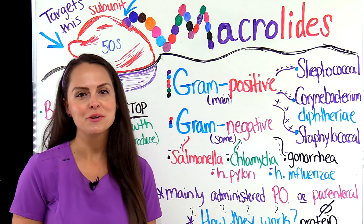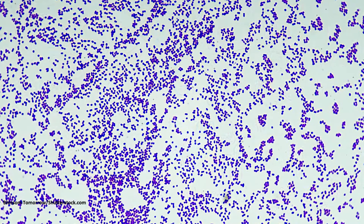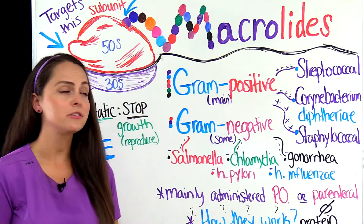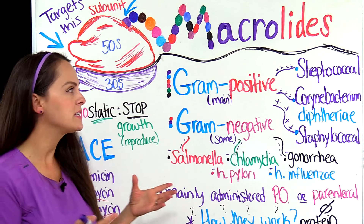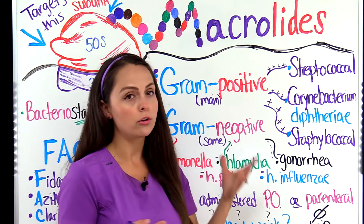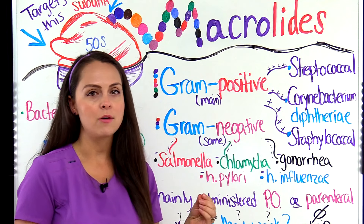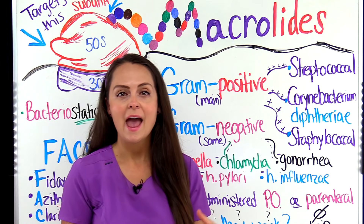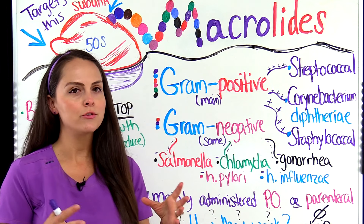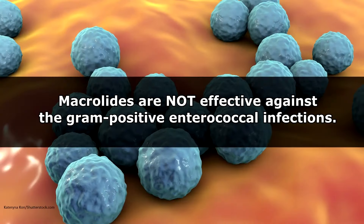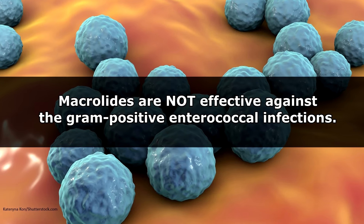The macrolides are a group of antibiotics that mainly target gram-positive bacteria, but they can go after some gram-negative as well. With gram-positive, what they like to go after are streptococcal infections, Corynebacterium diphtheriae, which is a main cause of diphtheria, and staphylococcal infections. One group that the macrolides aren't effective against that are also gram-positive are the enterococcal infections.